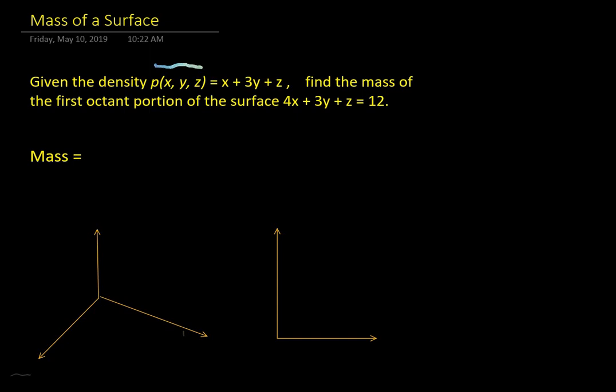We're going to find the mass of the first octant portion of the following surface, which is, as we hopefully know by now, a plane. So this particular plane has x-intercept of 3, y-intercept of 4, and z-intercept of 12. As typical, the graph is not to scale, and the portion in the first octant looks like this triangle right here. We're not doing a volume, that's from previous. This is just the mass of that triangular wedge shape, given the density function that's indicated up here.